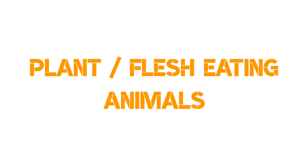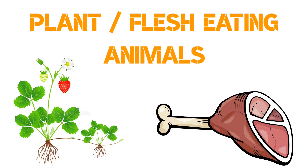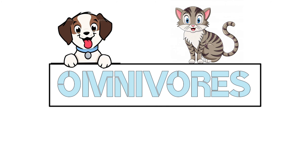Third: both plant and flesh eating animals. They eat plants as well as the flesh of other animals. They are also called omnivores. For example, cat, dog, crow, etc.